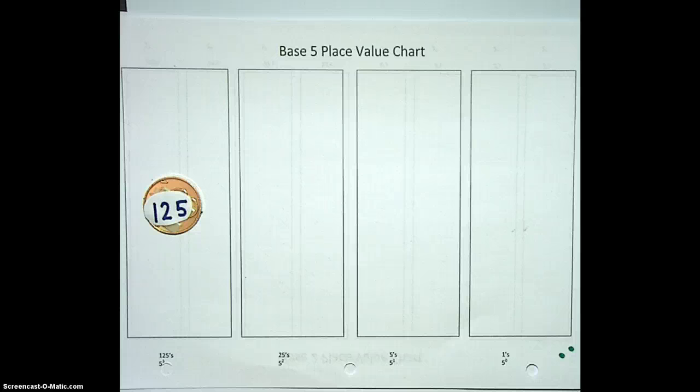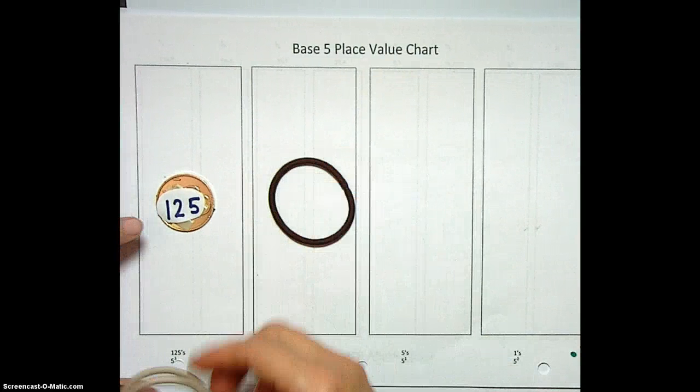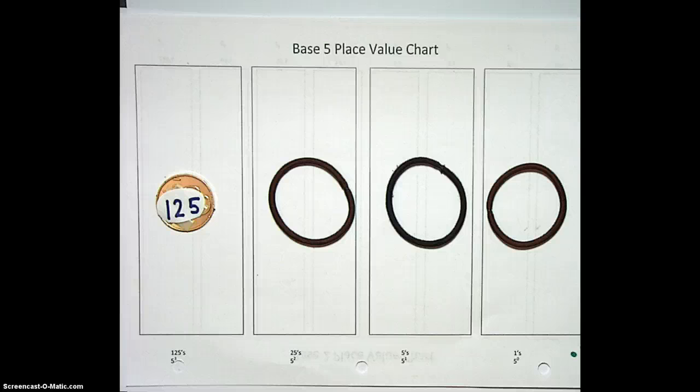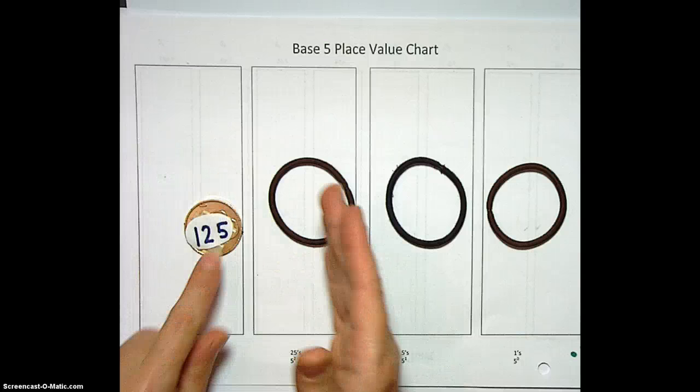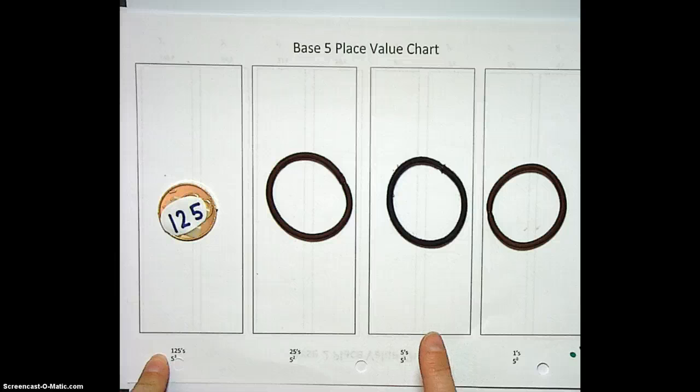We're going to exchange these 5 twenty-fives for 1 one-twenty-five. And then we will have, in base 5, this is actually a 1, 0, 0, 0, which does look like a thousand, but it's not a thousand. It's actually, and some people like to put this there instead, it's a 1, 0, 0, 0, because we have 1 one-twenty-five, 0 quarters, 0 nickels, and 0 pennies.